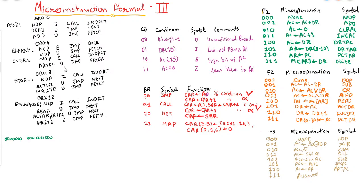Next is the I bit, which is for checking the indirect addressing mode. For I the condition is 0 1. Then next is call. For call, the branch value is 0 1. This is used to check: if the addressing mode is indirect, it will call the indirect subroutine; if the addressing mode is not indirect, it will go to the next address.